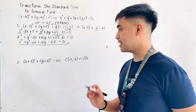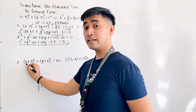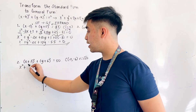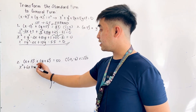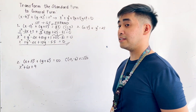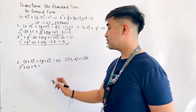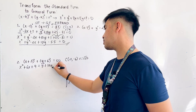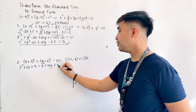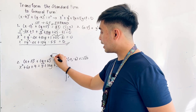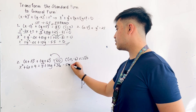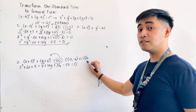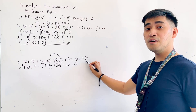Let us expand the second example. (x plus 3) squared: x times x is x squared; three times two is six, and six times x is 6x; three times three is nine. Then (y plus 6) squared: y times y is y squared; six times two is twelve, so that gives plus 12y; and six times six is thirty-six, giving plus thirty-six. The right side is equal to fifty, which we transfer to the left as minus fifty equal to zero.